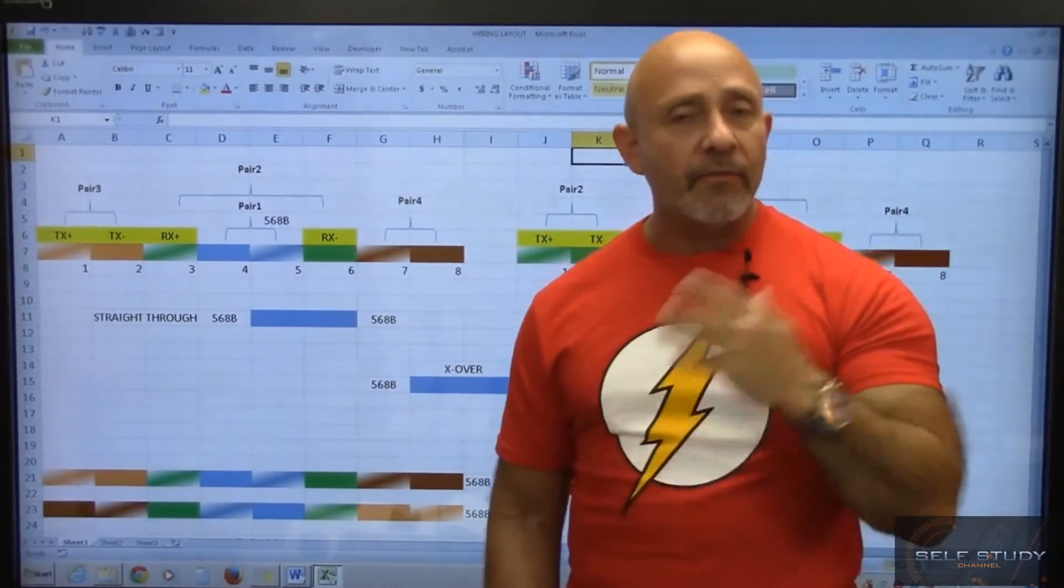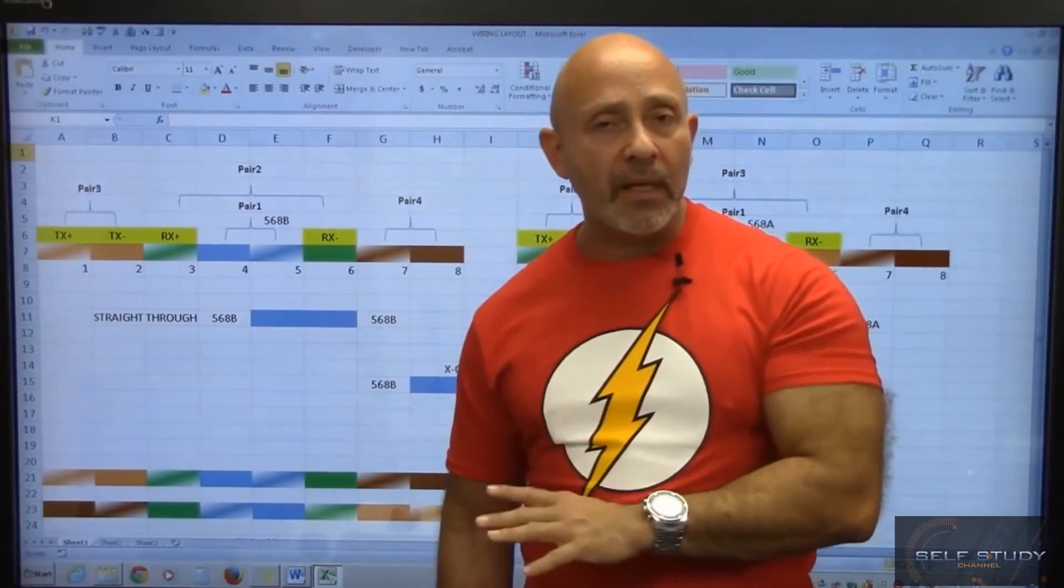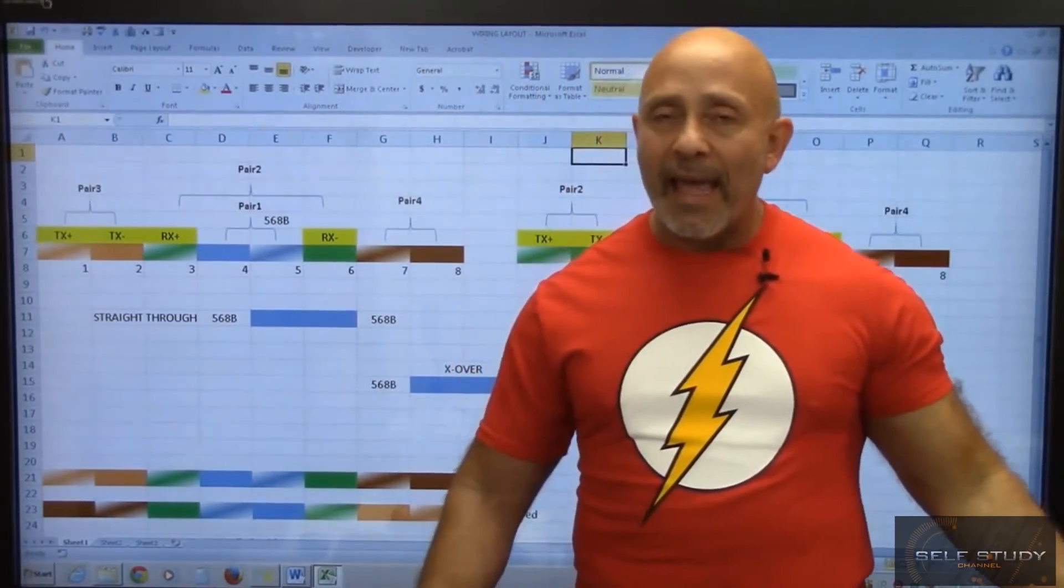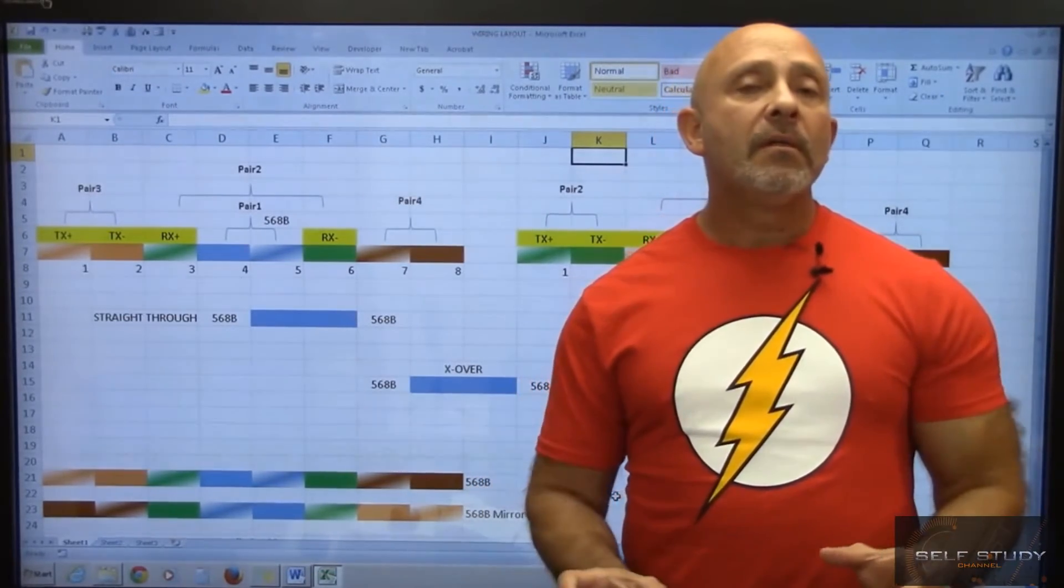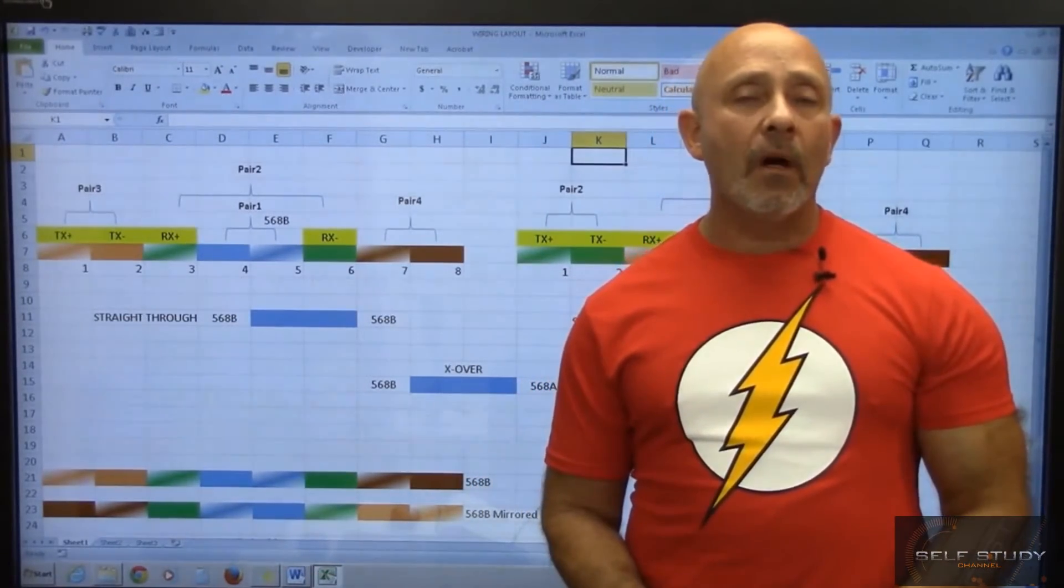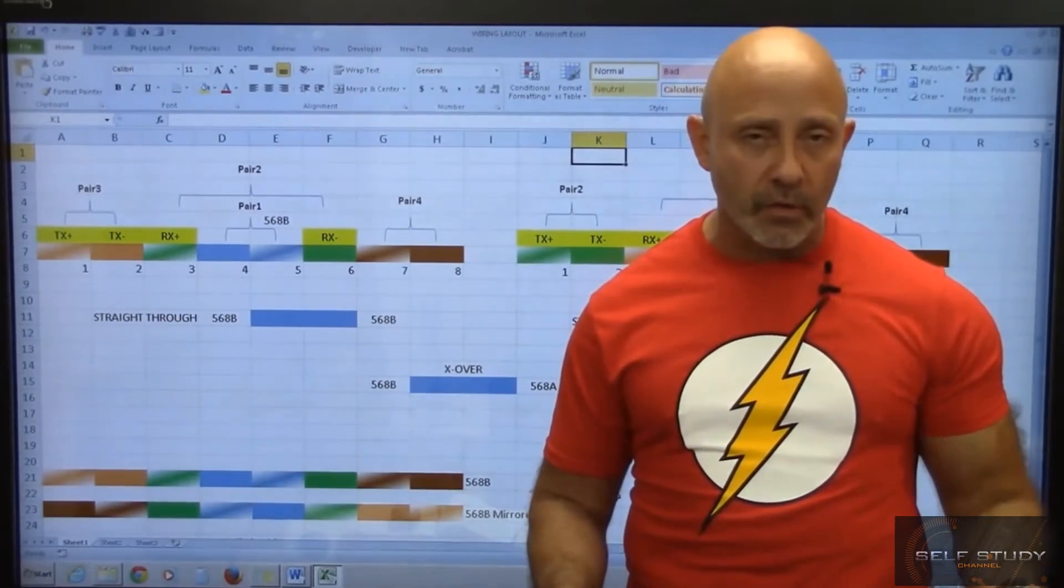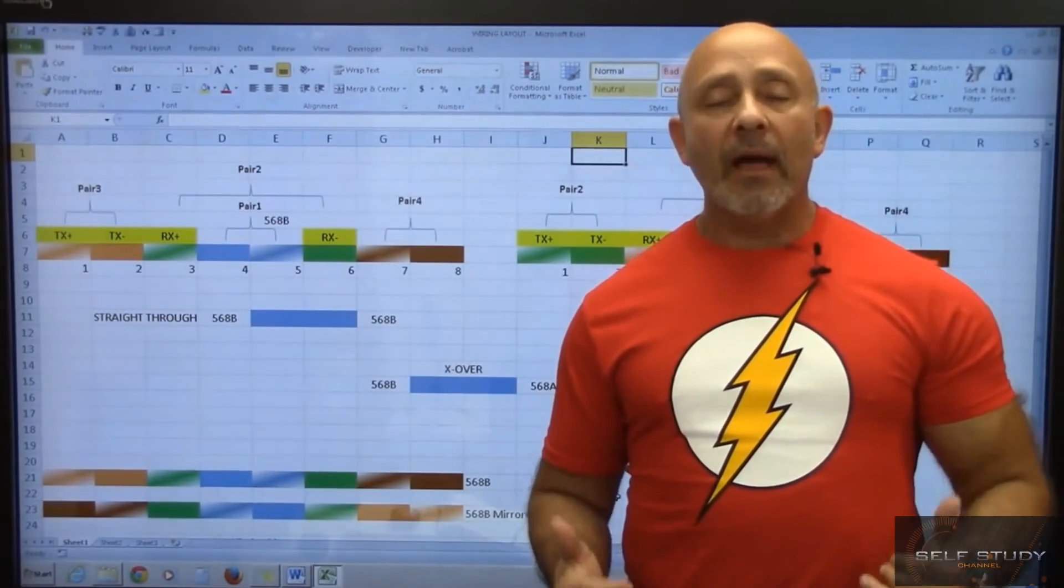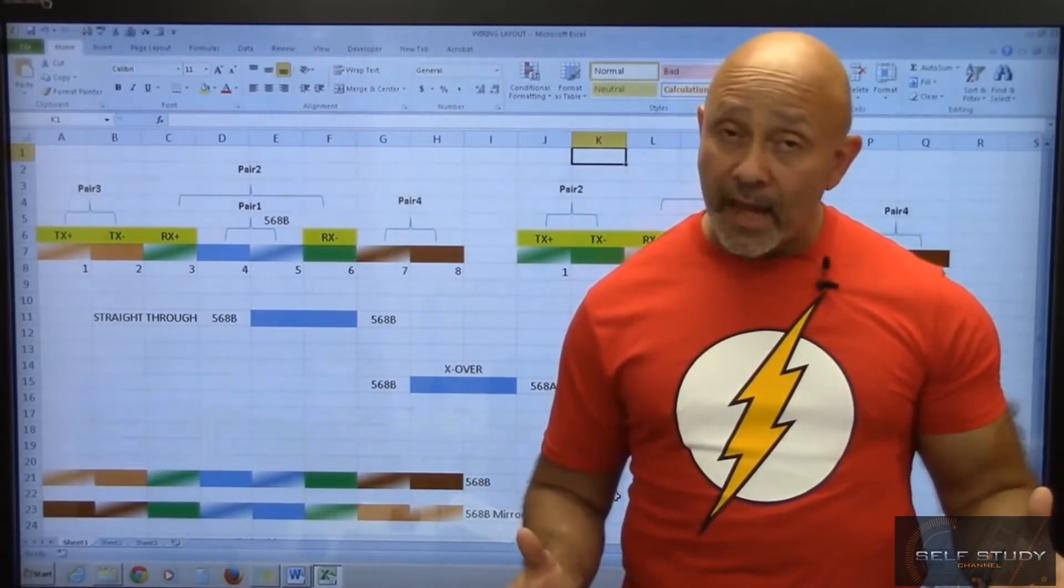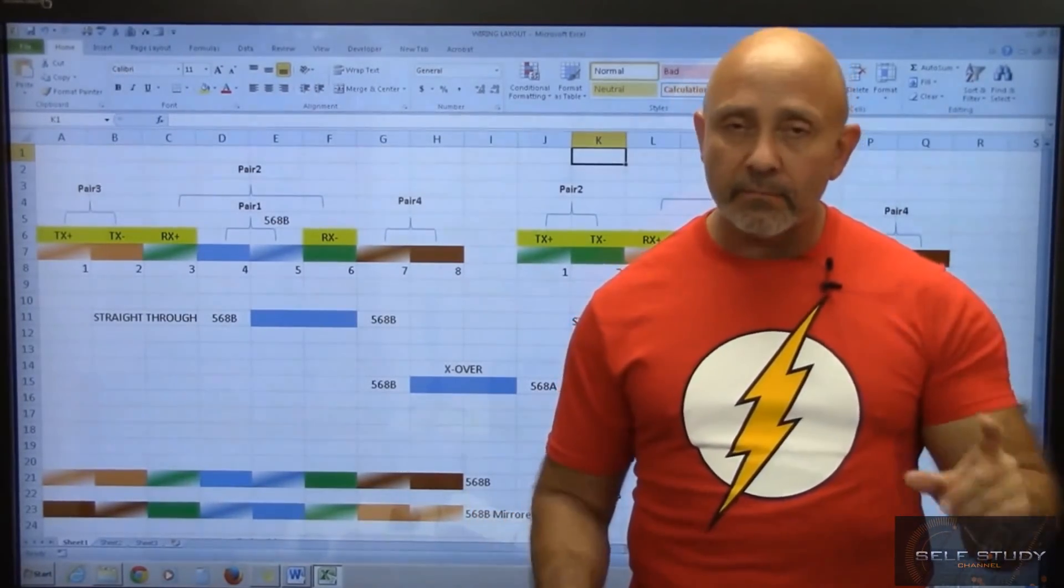Again, these are your standards: 568A, 568B. Similar, A on both sides, if you have both standards the same on both sides, that's straight-through. Different on either side, that's a crossover. And then we have the 568B mirrored that creates the roll cable. Those are your cables. That'll be it, I'll see you in the next one.